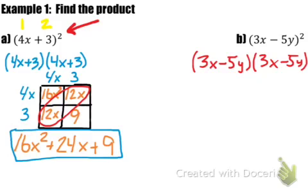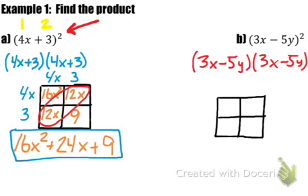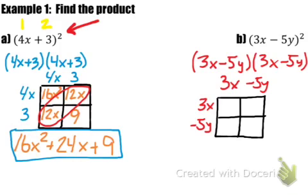We're going to use our box method again and write out our terms along the left side and the top. So we have 3x and then negative 5y along the side, and then 3x minus 5y along the top. Now just like before, we multiply out our terms: 3x times 3x gives us 9x squared. Then 3x times negative 5y gives us negative 15xy. Negative 5y times 3x also gives us negative 15xy. And finally, negative 5y times negative 5y — a negative times a negative — gives us positive 25y squared.